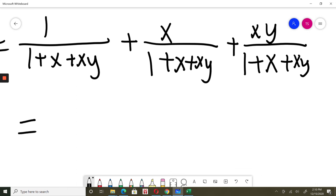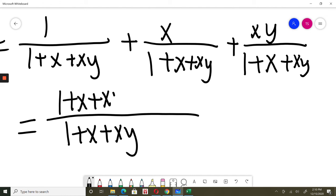So now this is equal. I can see I have the same denominator, 1 plus x plus xy. So I will just add numerators, 1 plus x plus xy. The same divided by the same. So that answer is 1.